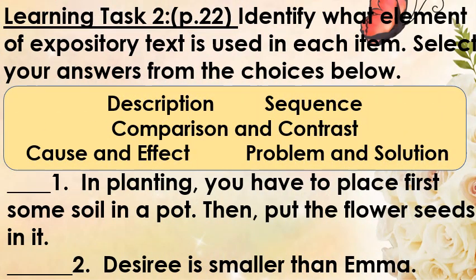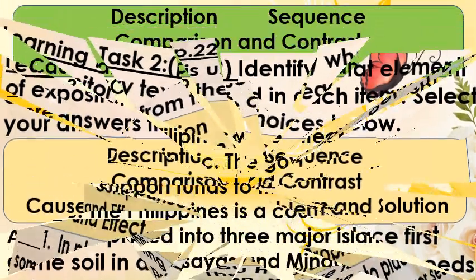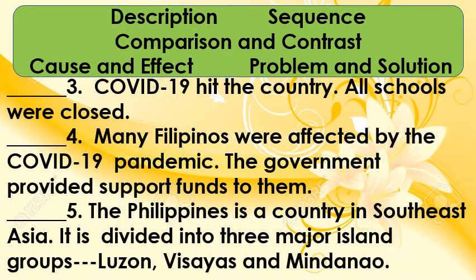Learning Task 2. Identify what element of expository text is used in each item. Select your answers from the choices below. Number 1: In planting, you have to place first some soil in a pot, then put flower seeds in it. Number 2: Desiree is smaller than Emma. Number 3: The Philippines is a country in Southeast Asia. It is divided into three major island groups: Luzon, Visayas, and Mindanao.